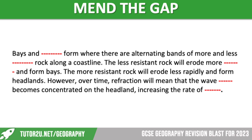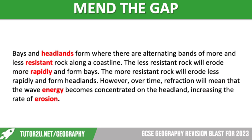Let's have a look at the missing key words. Bays and headlands form where there are alternating bands of more and less resistant rock along a coastline. The less resistant rock will erode more rapidly and form bays. The more resistant rock will erode less rapidly and form headlands. However, over time, refraction will mean that the wave energy becomes concentrated on the headland, increasing the rate of erosion.